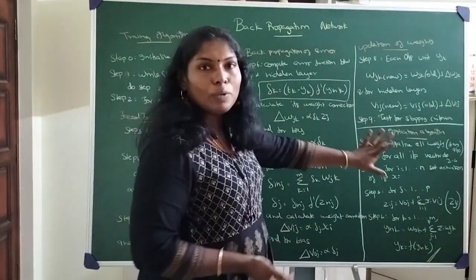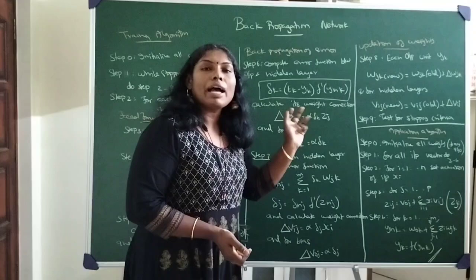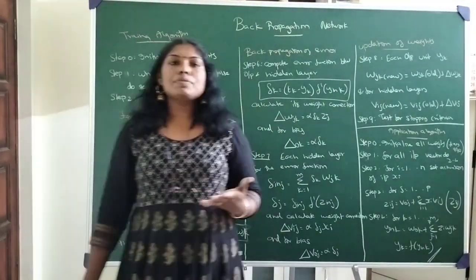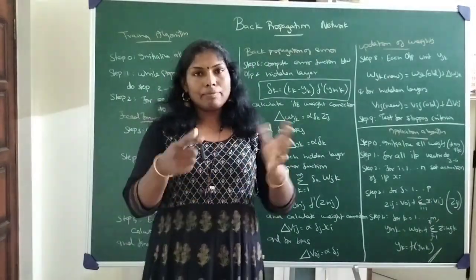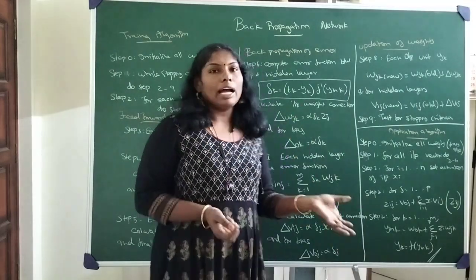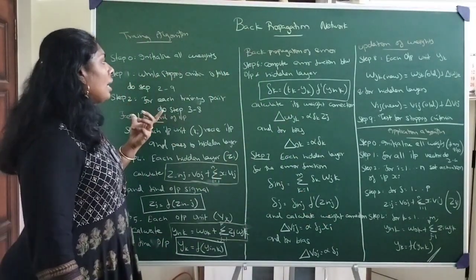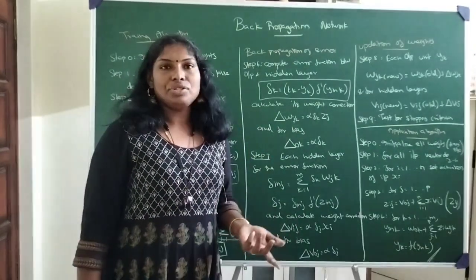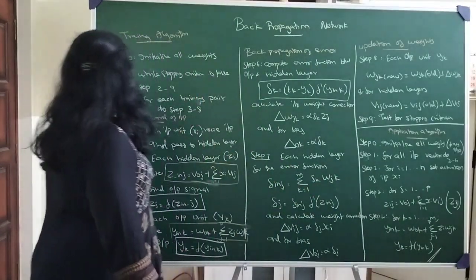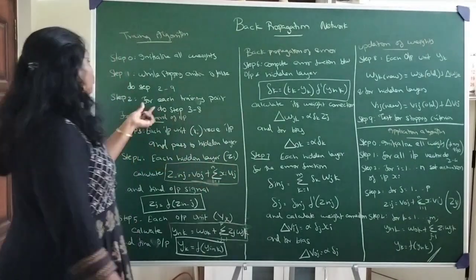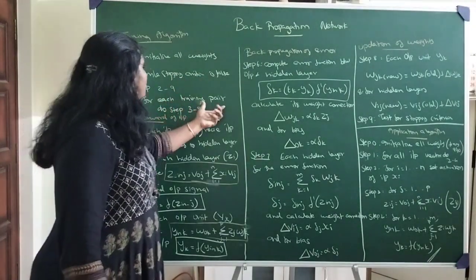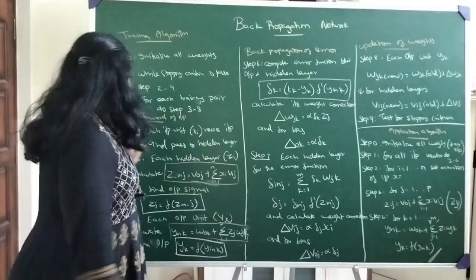This is the actual algorithm with all the formulas and a step-by-step procedure for how the backpropagation algorithm works. The first step is to initialize all the weights — whenever the backpropagation algorithm starts, we randomly assign values to all the weight vectors. We then check the stopping criteria, which is mostly the number of iterations needed or the end of input patterns. If the stopping criteria is false, we start training for each and every training pair.